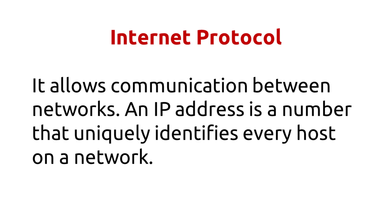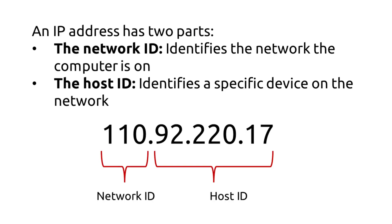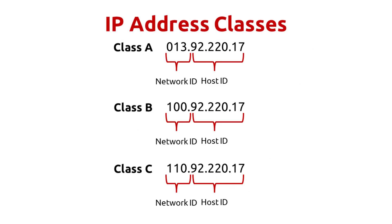IP means Internet Protocol. It allows communication between networks. An IP address is a number that uniquely identifies every host on a network. An IP address has two parts: the network ID identifies the network the computer is on, and the host ID identifies a specific device on the network. IP addresses can be very confusing because there are different formats available.